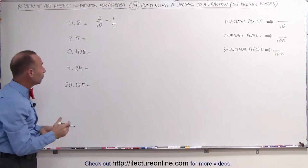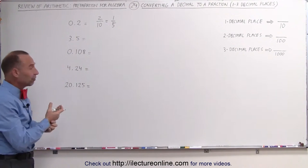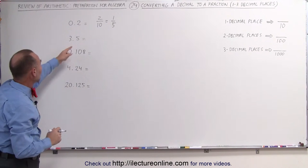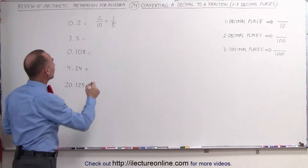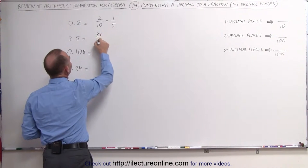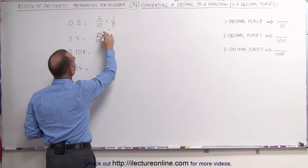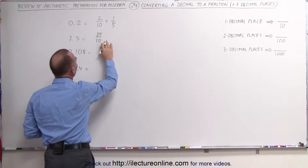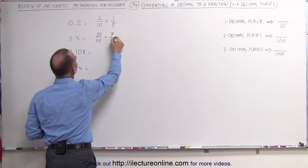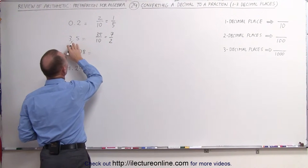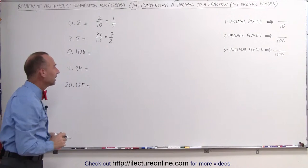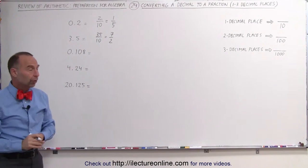Here again we have one decimal place, so we write it as a fraction with 10 as the denominator. We get rid of the decimal point, and this becomes 35 divided by 10. We can divide both the numerator and the denominator by 5, which means this can be written as 7 divided by 2. Therefore, 3.5 is the same as 7 divided by 2 in fractional form.